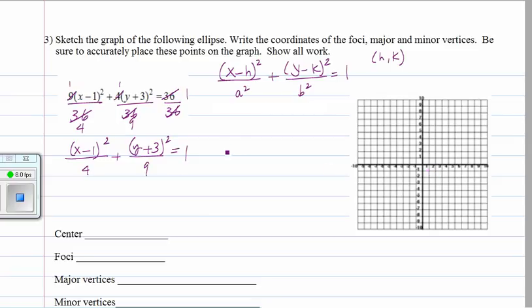So first, let's find the center. That's the opposite of what follows the x. So that's 1. And the opposite of what follows y. So that's negative 3. So (1, -3) is the center.